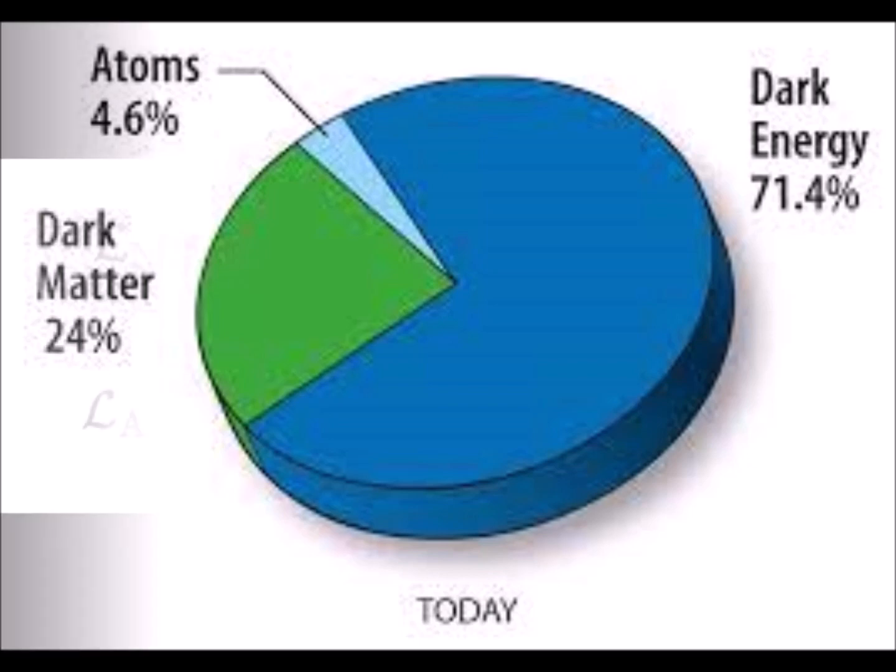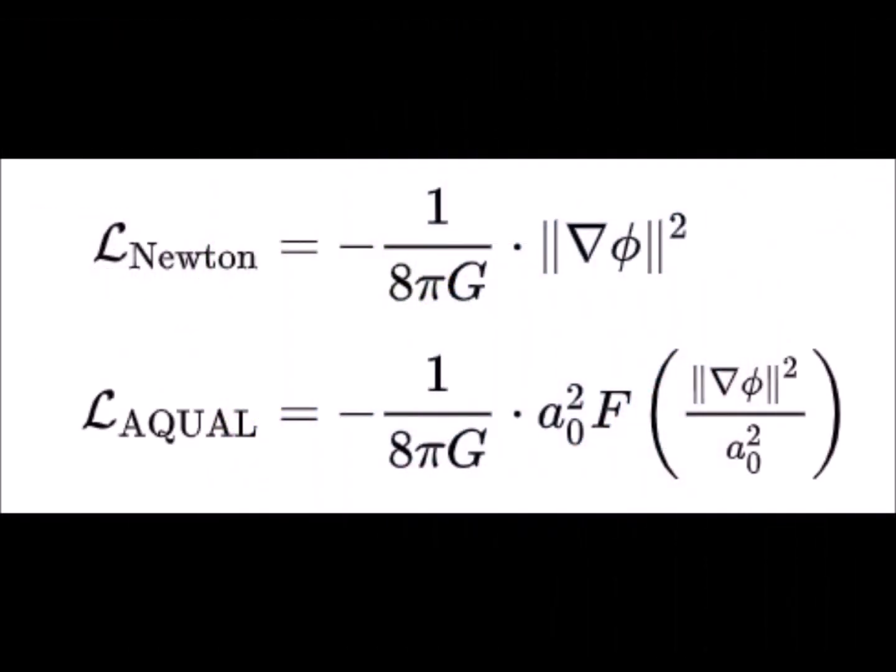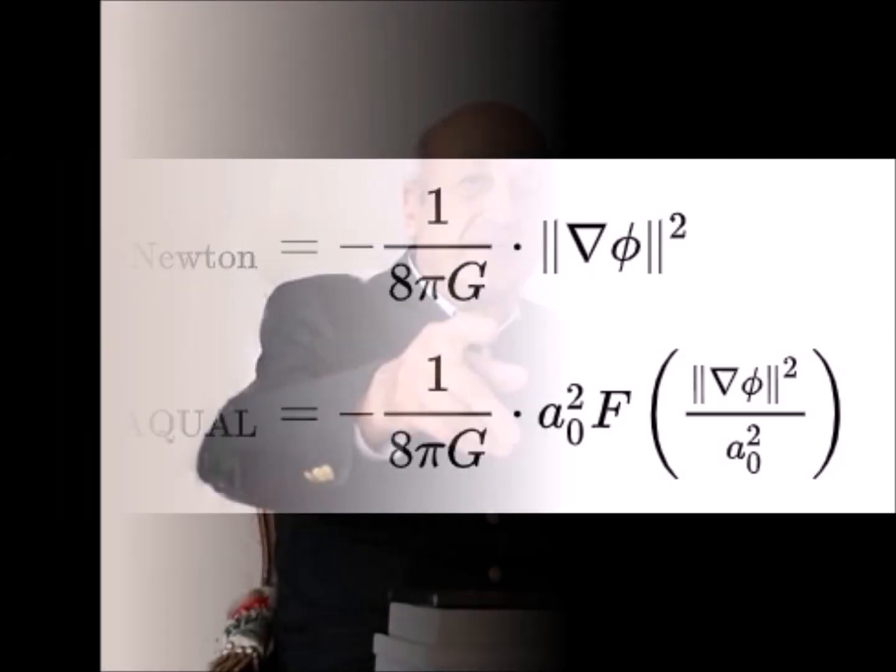The MOND, Modified Newtonian Dynamics, theory postulates a decrease in Newton's law with distance. The Modified Tensor Vector Scalar Gravity Theory MOG, Modified Gravity, is a variant of the MOND theory.